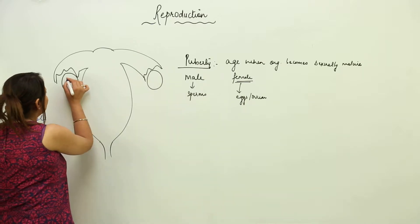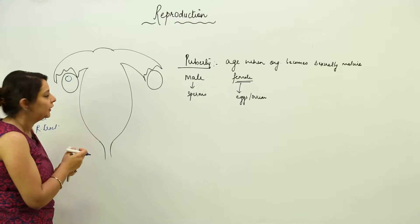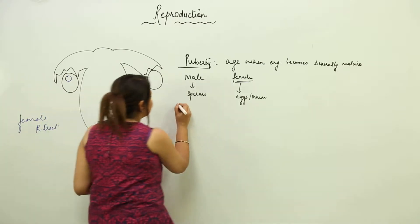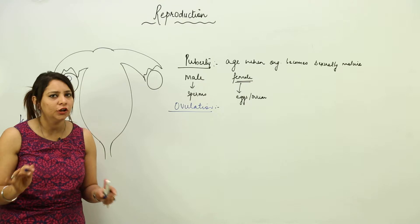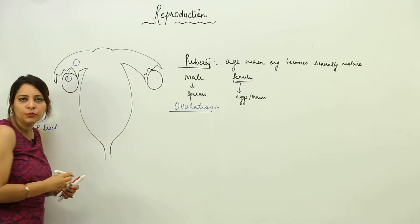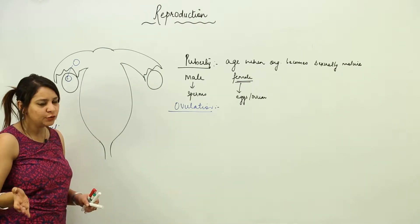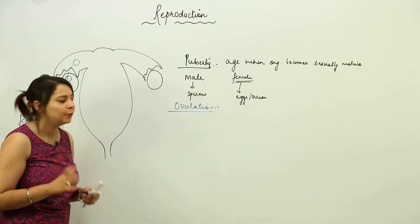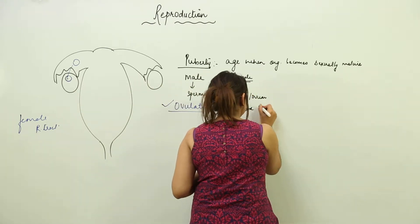Suppose one egg develops here — what is the fate of this egg? Whether it is going to get fertilized or not, the event of ovulation will take place. Ovulation is independent of whether fertilization is going to occur or not. Ovulation means release of the egg from the ovary into the fallopian tube. This happens on a monthly basis when the egg gets mature.